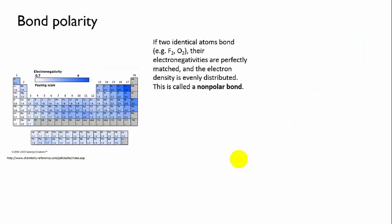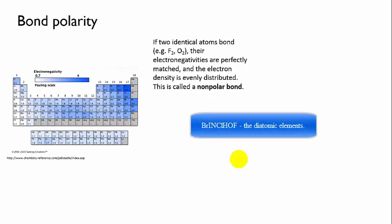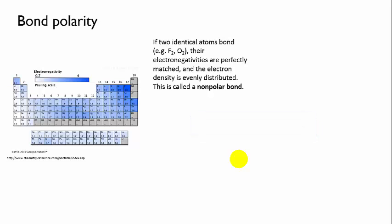Okay, so let's consider a simple covalent bond between two identical atoms, as happens with diatomic elements like bromine, oxygen, hydrogen, and so on. Remember Brinkelhoff. In a bond like this, since the atoms are identical, they have the same electronegativity.